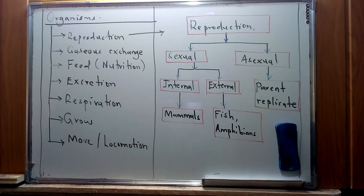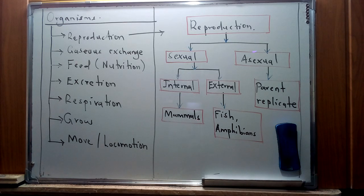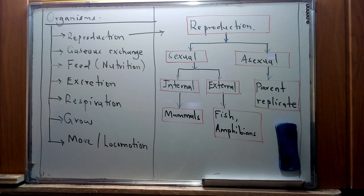Our discussion today focuses on reproduction — the production of offspring from parents. Reproduction consists of two basic types: sexual reproduction, where organisms combine their genetic information through sexual contact from each parent to form a unique offspring; and asexual reproduction, where one parent copies itself to form a genetically identical offspring. We'll see this when discussing genetics, especially in the process of replication, which forms the basis for asexual reproduction.